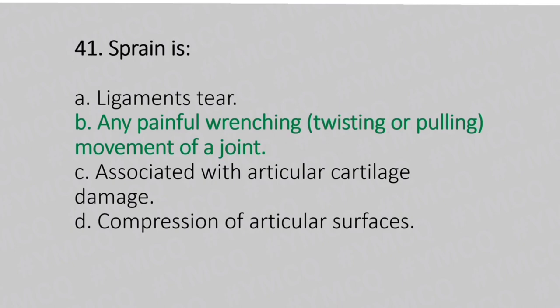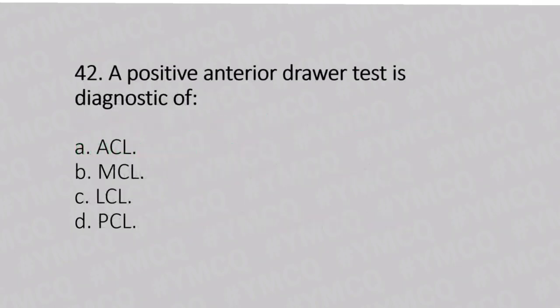Now let's move to question number 42. A positive anterior drawer test is diagnostic of. Option A: ACL. Option B: MCL. Option C: LCL. Option D: PCL. And the answer is Option A, ACL.